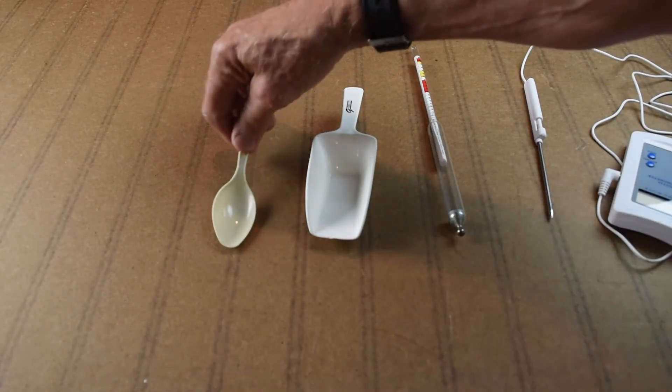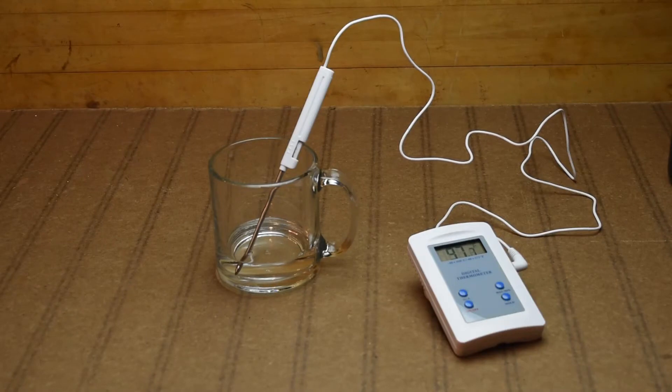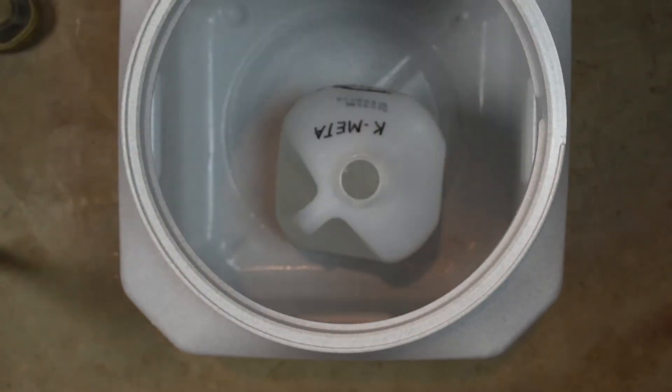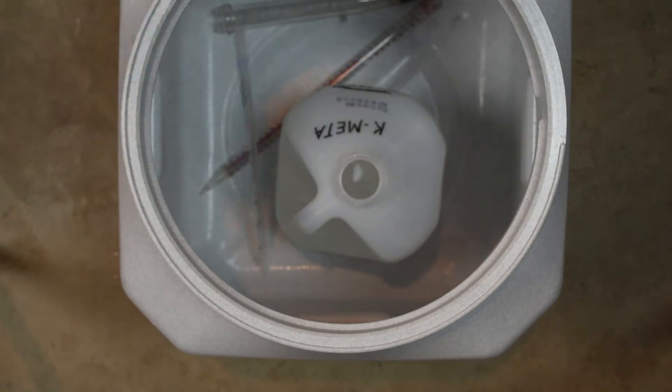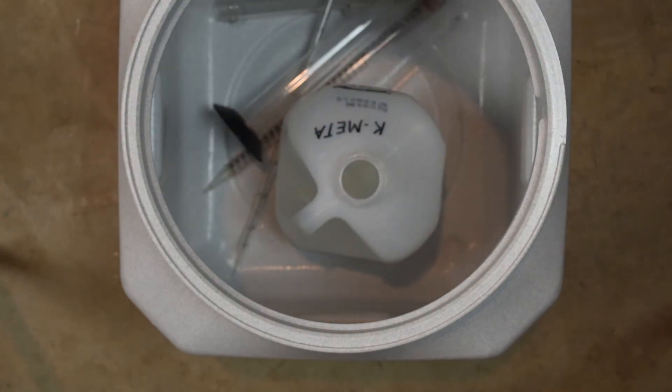You can use just the fumes from potassium metabisulfite solution to sanitize items that can't be wiped or rinsed. Place an open bottle of solution in a large container, add the items, cover, and let set for 10 to 20 minutes.